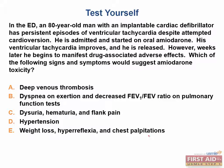Test question: In the emergency department, an 80-year-old man with an ICD has persistent episodes of ventricular tachycardia despite attempted cardioversion. He is admitted and started on oral amiodarone. His ventricular tachycardia improves and he is released. However, weeks later he begins to manifest drug-associated adverse effects. Which of the following signs and symptoms would suggest amiodarone toxicity?